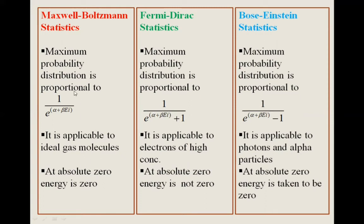In MB statistics, at absolute zero the energy is zero. In Fermi-Dirac statistics, at absolute zero the energy is not zero. In Bose-Einstein statistics, at absolute zero the energy is taken to be zero.